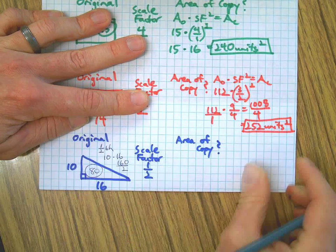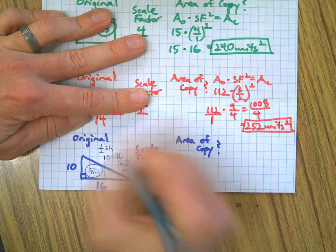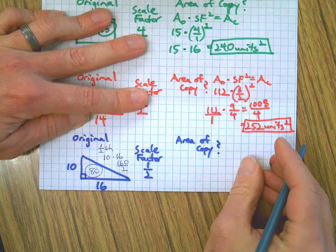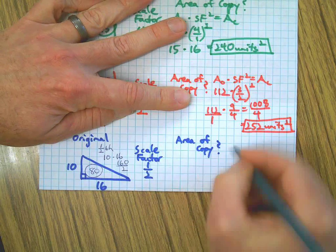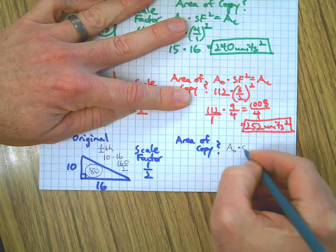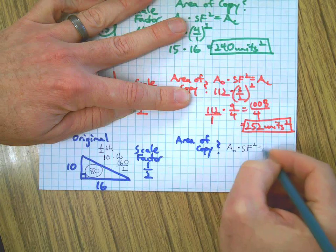I'm going to cut it in half. That means 80. I had to go to ballpoint pen here to get this one to fit. Okay, so I have area of the original times scale factor squared equals area of the copy.